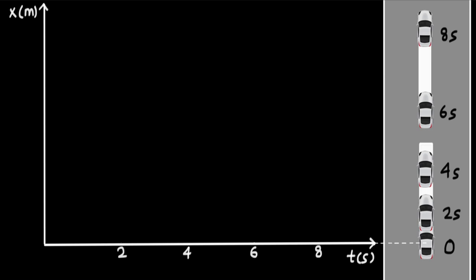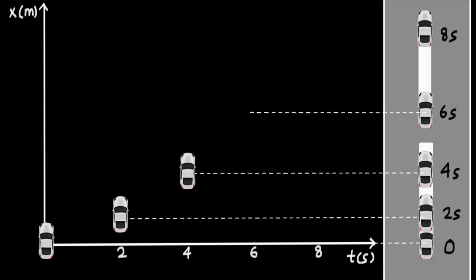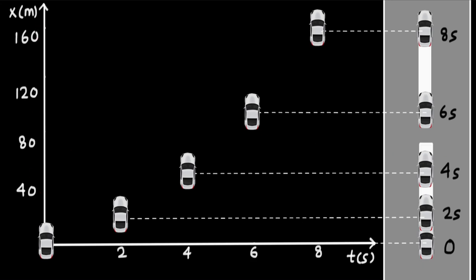At t equals 0, when the motion is just beginning, the car is at the origin. At t equals 2 seconds, the car could be at this point. At t equals 4 seconds, this is where it would be. At t equals 6 and t equals 8 seconds, these are the corresponding positions. Let's also write some positions on the y-axis — these are just random numbers introduced to provide a scale.